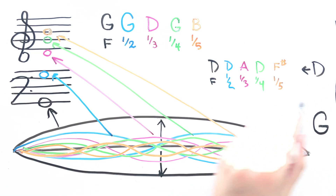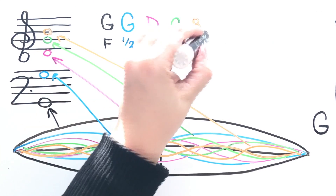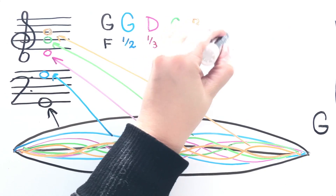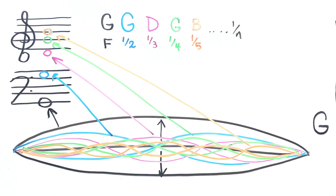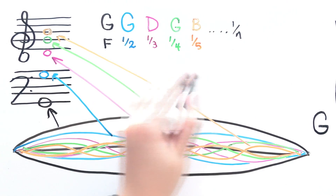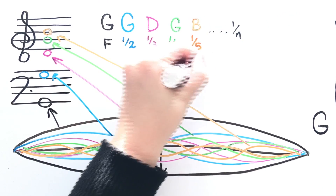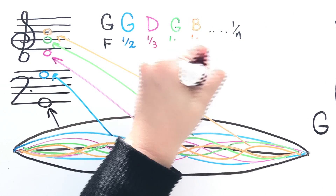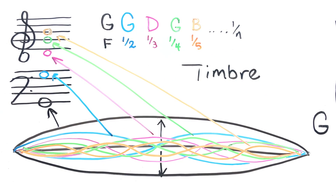So you can figure the overtones to any note this way, and obviously this doesn't stop here — it's going to just continue on. The intensity of these overtones is what produces the timbre of an instrument. I'm going to go to my instrument to finish up this demonstration.